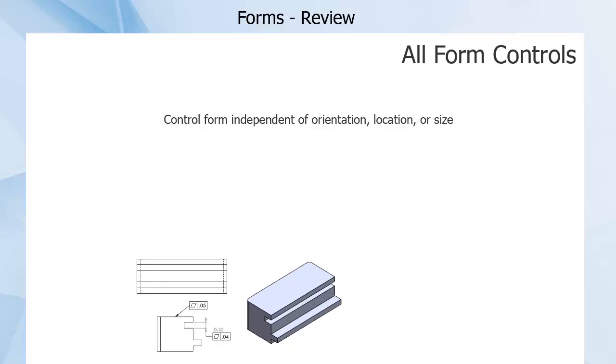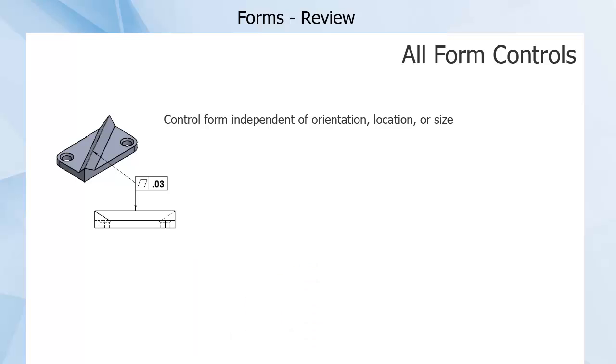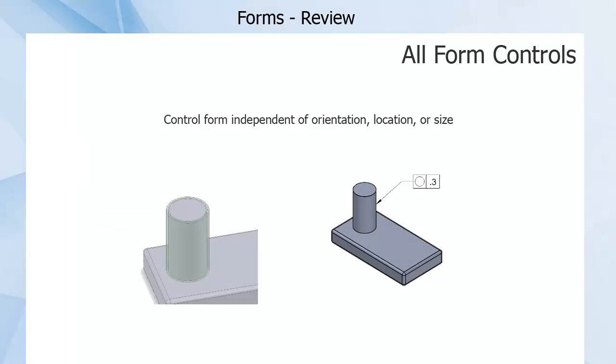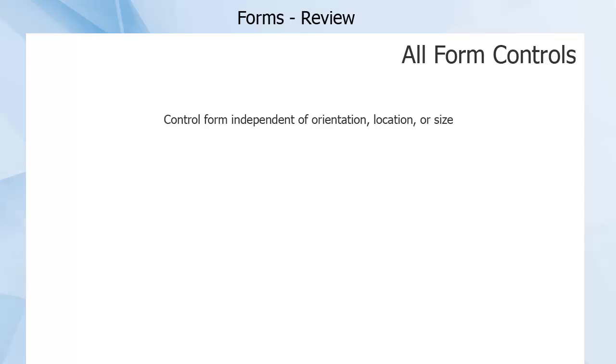Important facts about all form controls is that they are independent of orientation, location, or size. A surface can be especially flat, or a line can be straight, or a circle can be round, or a cylinder very cylindrical, all without being the right size, in the right spot, or at the correct angle compared to other features.